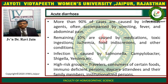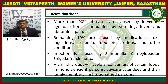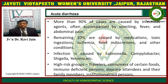Acute diarrhea — more than 90% of cases are caused by infectious agents, often accompanied by vomiting, fever, and abdominal pain. The remaining 10% are caused by medications, toxic ingestions, ischemia, food indiscretions, and other conditions.